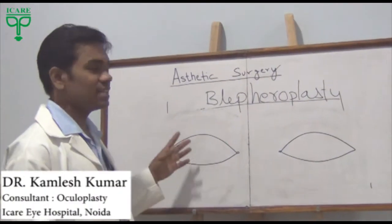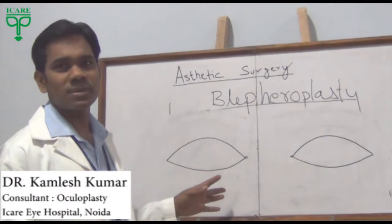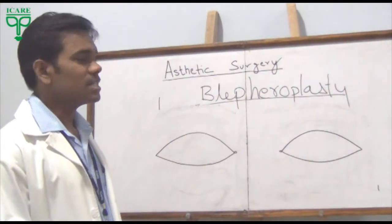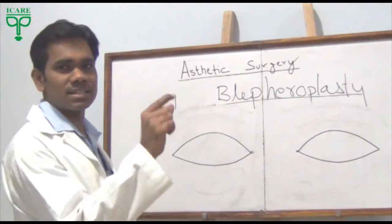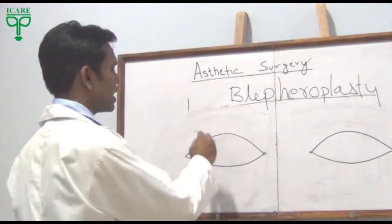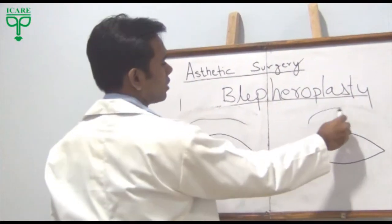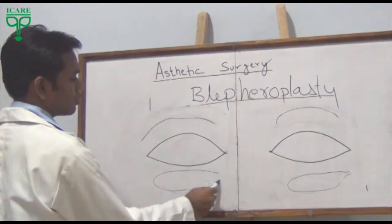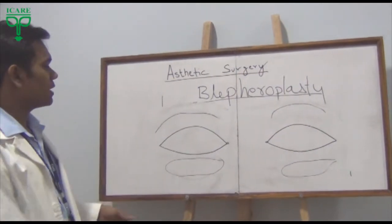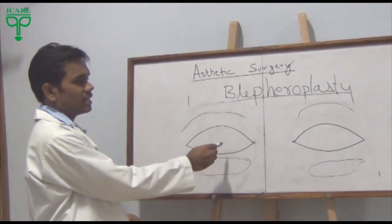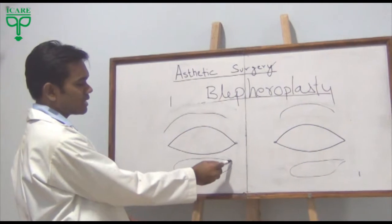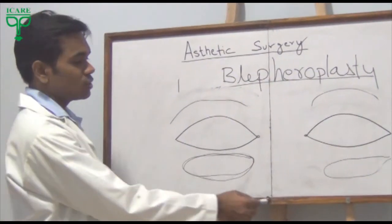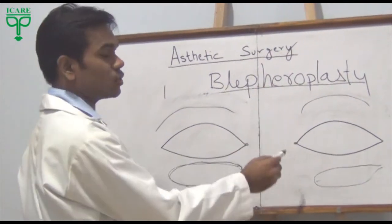I am going to discuss aesthetic surgery. One of the most common aesthetic surgeries is blepharoplasty. Blepharoplasty is the most common aesthetic surgery of the skin. The skin may droop in the upper area, giving a different appearance. We can remove the excess skin through surgery from the peripheral area.